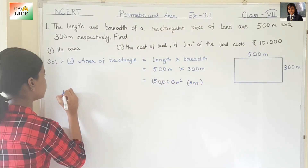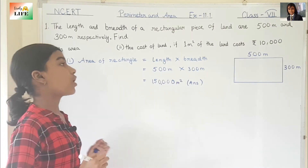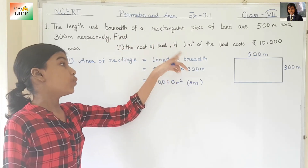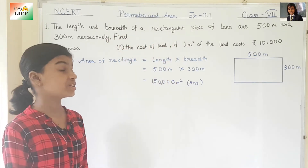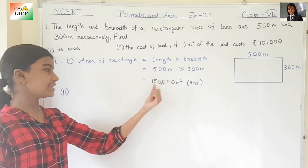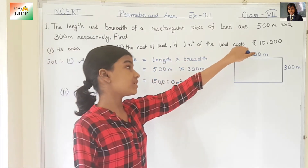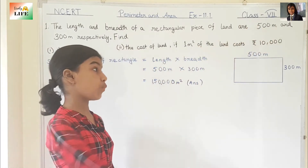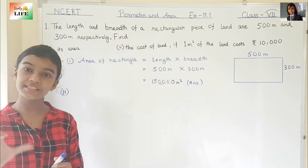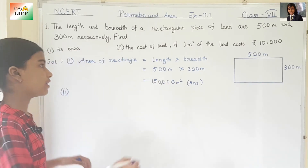Now let's move to the second part: the cost of the land. We need to find the cost of the land if 1 meter square of the land costs rupees 10,000. The area of this land is 1,500,000 meter square, so we need to find the cost of 1,500,000 meter square.